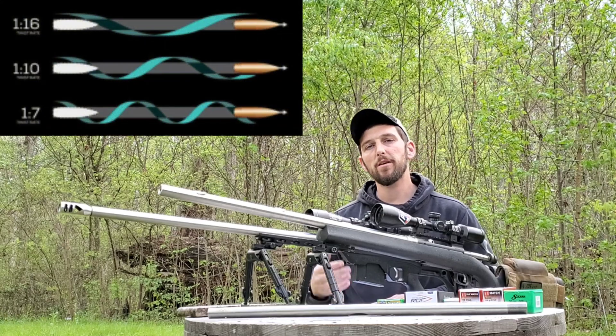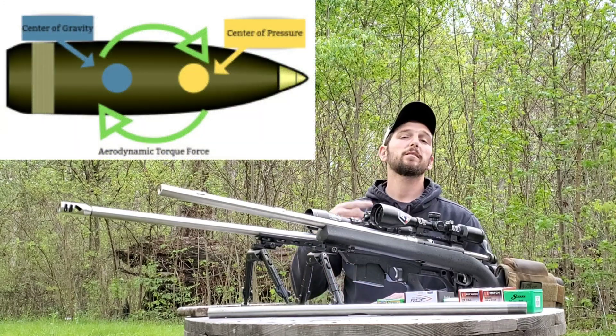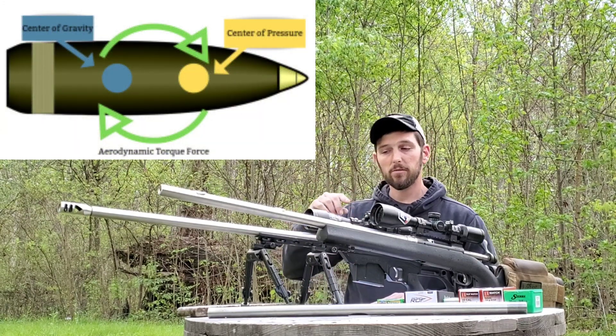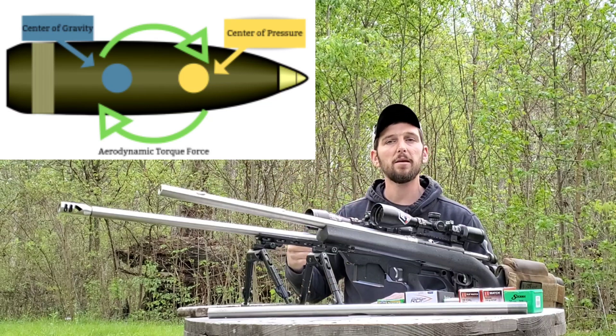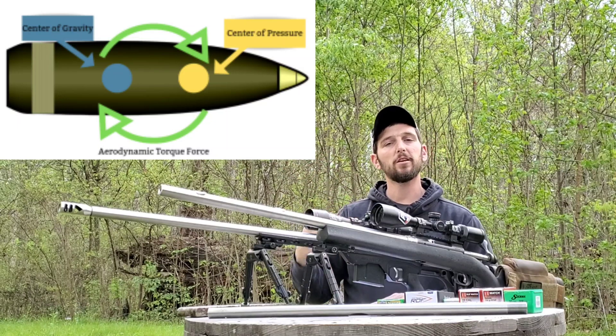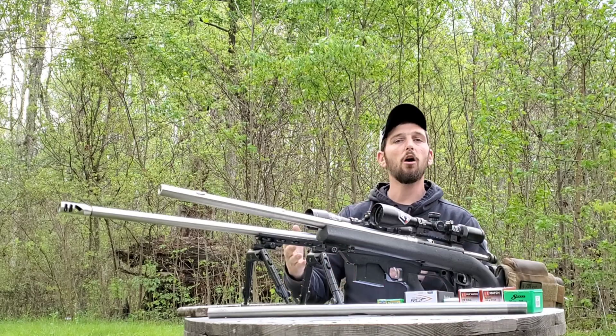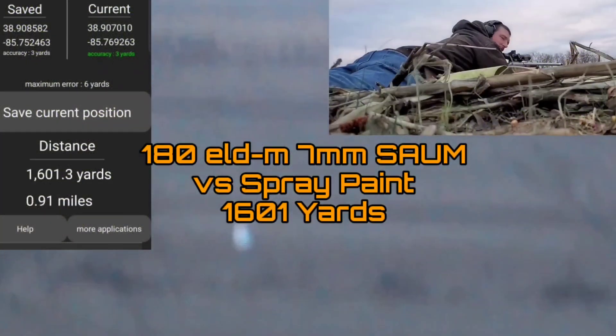What determines the proper twist rate for a bullet? A bullet's proper twist rate is determined by something called the center of pressure. If you have a gyroscopically stabilized bullet, it is spinning around a center point — that center point is the center of pressure. If you have a high-BC, long-for-caliber bullet with a short bearing surface and a very long skinny ogive, that bullet is going to have a center of pressure further back, because most of the weight is towards the boat tail.